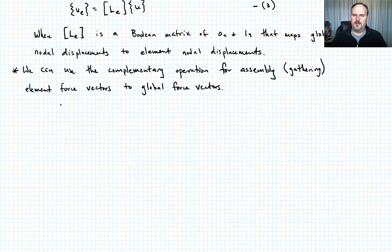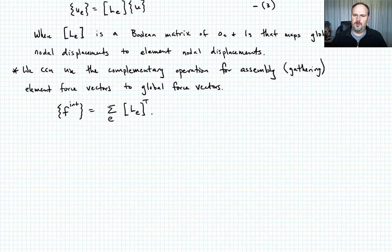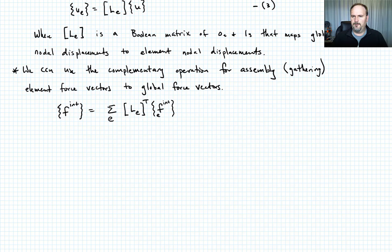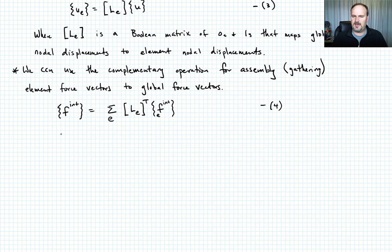So how we do this is fairly straightforward. The internal force vector — global, no element subscript — is equal to the sum over all elements of the quantity L_E transpose times F_E_int. This is the transpose of the connectivity matrix times the element force vector, and we sum those all up. Let's call that equation 4. We have similar expressions for both the external force vector — call that equation 5.